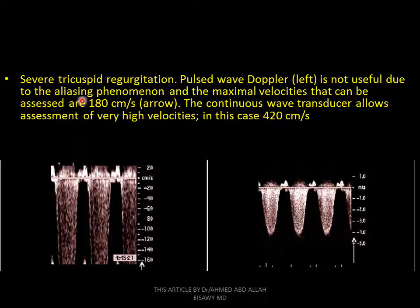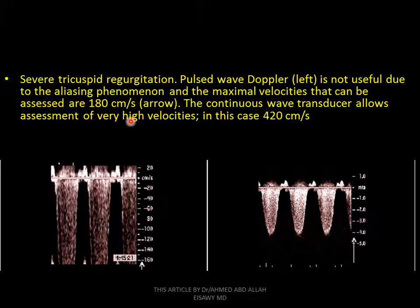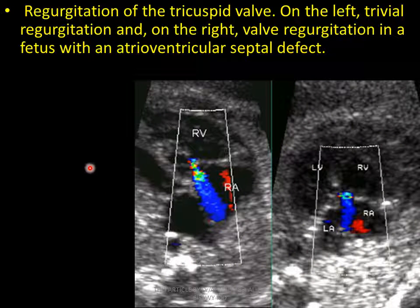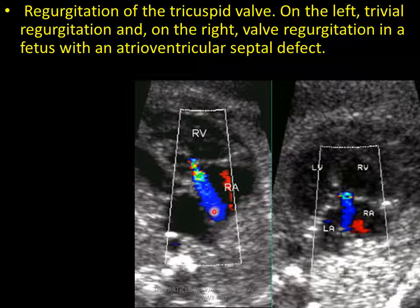Pulsed wave Doppler is not useful due to aliasing phenomena; the maximal velocity that can be assessed is 180 cm/s. Continuous wave Doppler allows assessment of very high velocities — in this case, 420 cm/s. In the four-chamber view and two-dimensional view, we see the mitral valve and the tricuspid valve. Regurgitation of the tricuspid valve is seen on the left, and on the right, valve regurgitation with EV septal defect. This is tricuspid regurgitation.